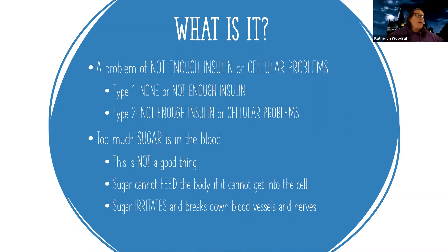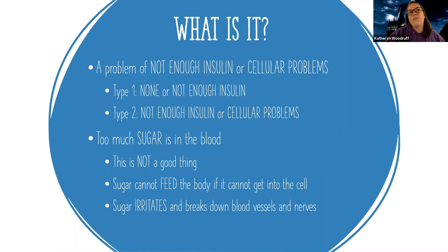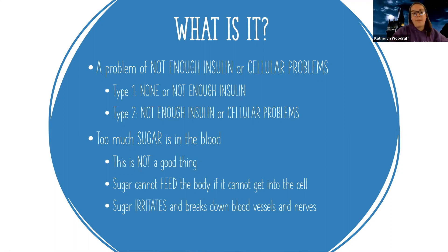Type one is where you have none or not enough insulin. Understanding why this happens is not completely well understood — there are some genetics, environmental factors, and viral causes. But at the end of the day, you don't have insulin. And insulin is a key that unlocks the cell so that glucose can get in.